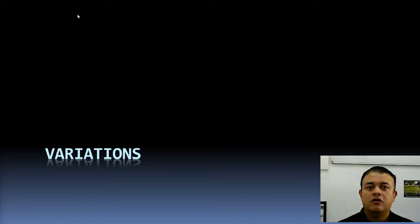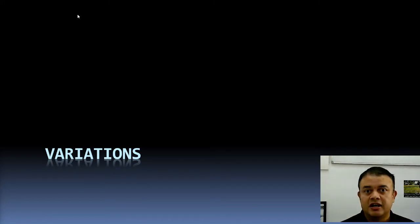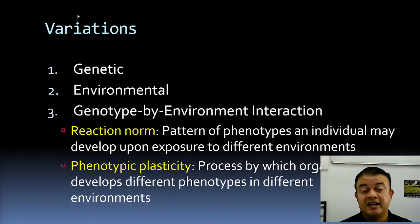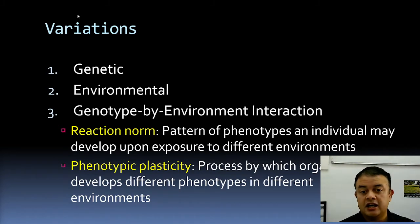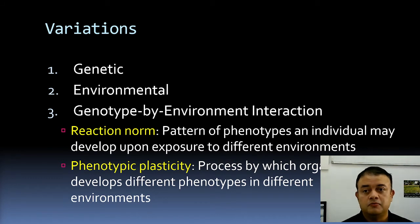Let's talk about variations. Variations are the raw materials for natural selection to happen. The three major kinds of variations are genetic variations, environmental variations, and genotype by environment interaction — the variation that results from genotype by environment interaction. These three are the major forms of variation.